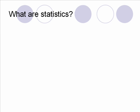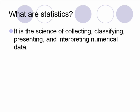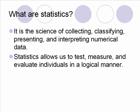So let's start with a question. What are statistics? One definition: statistics is the science of collecting, classifying, presenting, and interpreting numerical data. In whatever study or project you're doing, most of you will use numbers to represent something — we call those variables. We talked about that a couple weeks ago, about independent variables and dependent variables. So the variables will turn into numbers somehow. What statistics allows us to do is to test something, to measure something, and to evaluate individuals in some kind of logical manner.